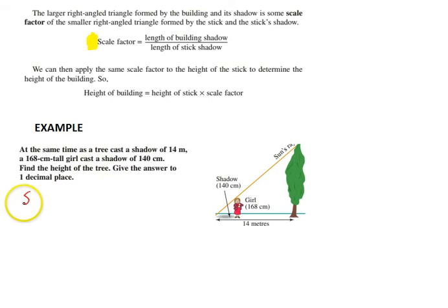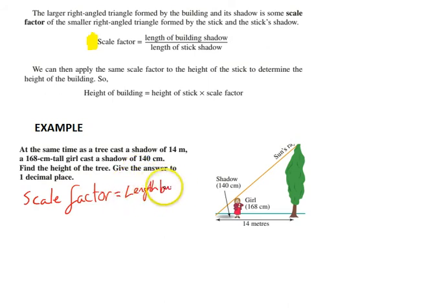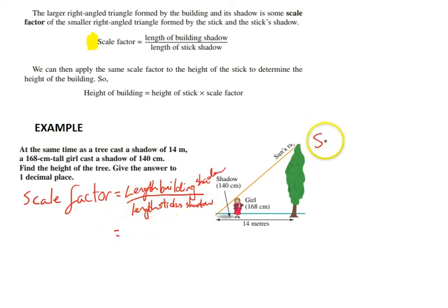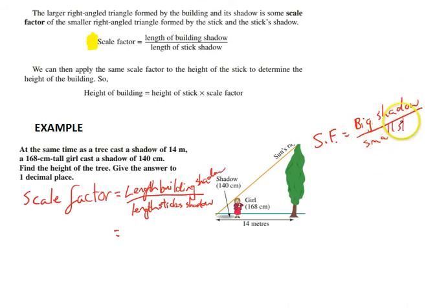Step one: let's find the scale factor. Scale factor is equal to the length of the building's shadow divided by the length of the stick's shadow. The stick, obviously, is not a stick in this case — it's the girl. So, scale factor (SF) equals big shadow divided by small shadow.